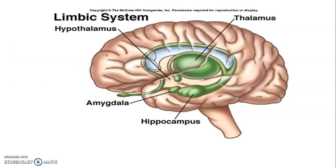This picture shows parts of the limbic system. We have the amygdala, the hippocampus, the thalamus, and the hypothalamus. We are going to discuss other parts.